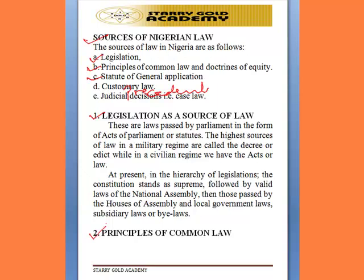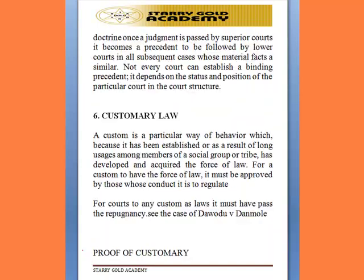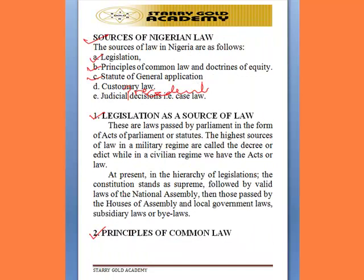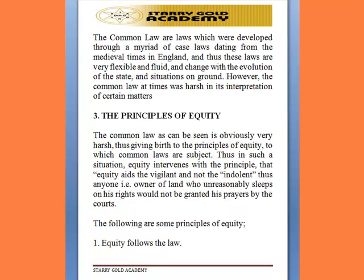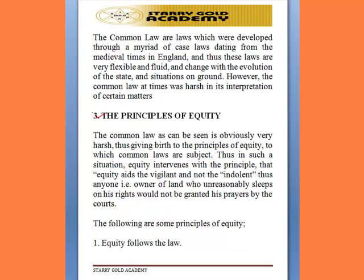Secondly, we look at the received English Law, which comprises three elements: the principles of common law, the doctrine of equity, and the statute of general application. What do we understand by common law principles? These are laws that were in existence in England — customs of the people that were brought together, their ambiguities eliminated, and particular laws established from those common customs. These are known as common laws, the first type of law used in England.